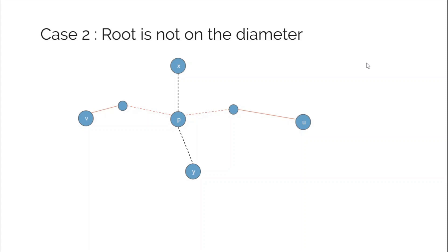So the overall algorithm is: choose any node as root, run a DFS, find the farthest node x, take x as root, run a DFS again, and the maximum distance from x to any other node is the diameter. In the next video I'll be solving a problem to show that this algorithm works. We've proven case one, and case two you are going to prove. Thank you guys for watching — keep coding, and good luck for case two!